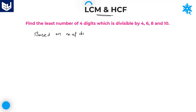If you see this first question in this session: find the least number of four digits which is exactly divisible by 4, 6, 8, and 10. First of all, if you want to calculate the least four-digit number which is exactly divisible by all these numbers, first we need to calculate the LCM of all these numbers.